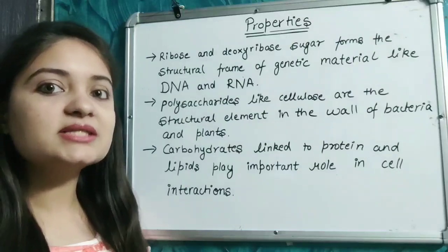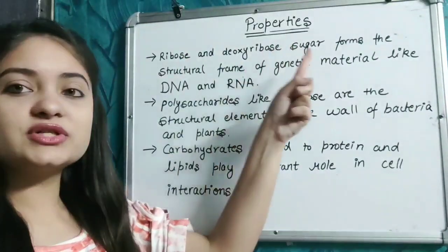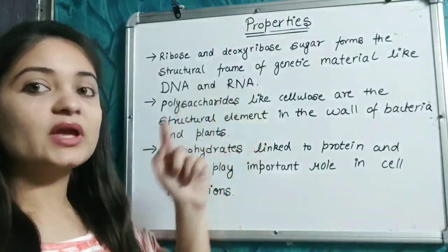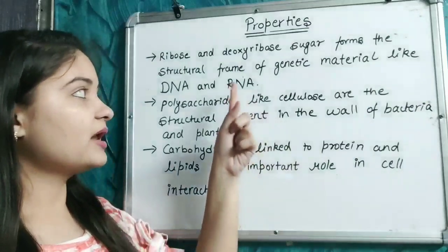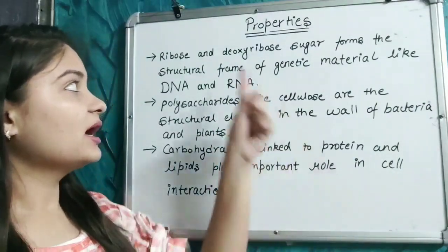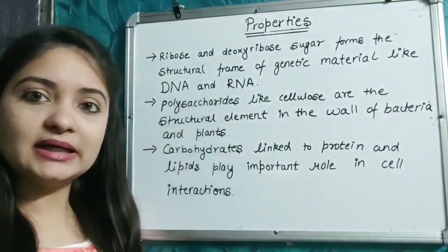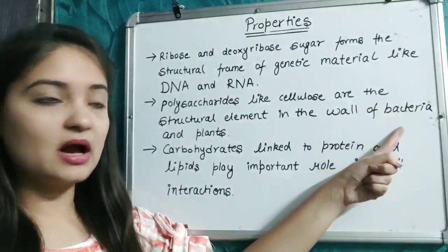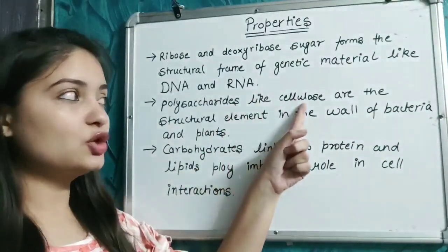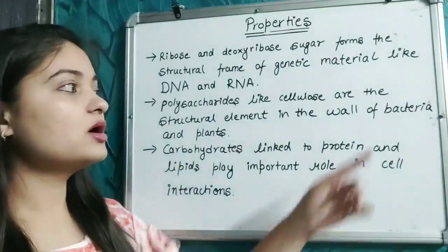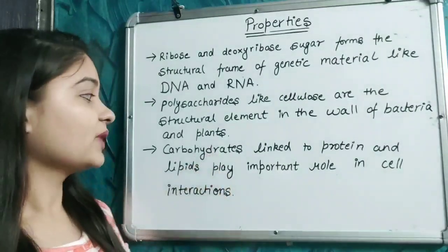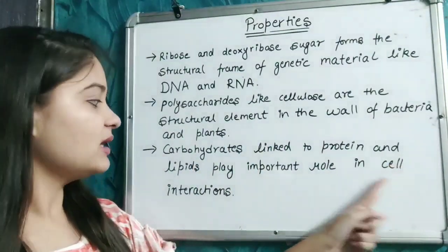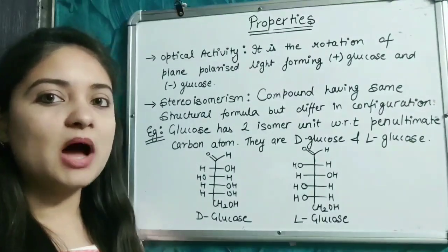Now let's talk about some properties of carbohydrates. Ribose and deoxyribose sugars form the structural frame of genetic material like DNA (deoxyribonucleic acid) and RNA (ribonucleic acid). Polysaccharides like cellulose are structural elements in the walls of bacteria and plants. Carbohydrates linked to proteins and lipids play a very important role in cell interactions.